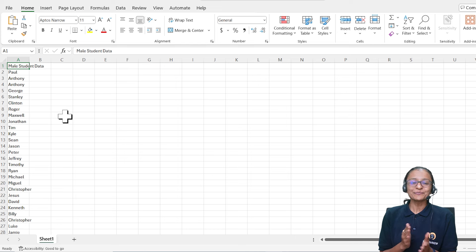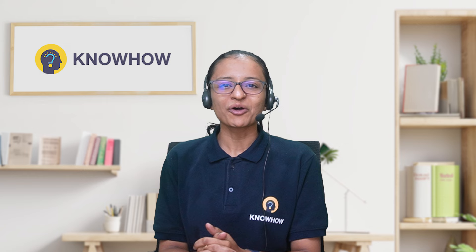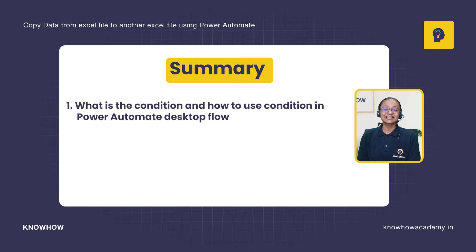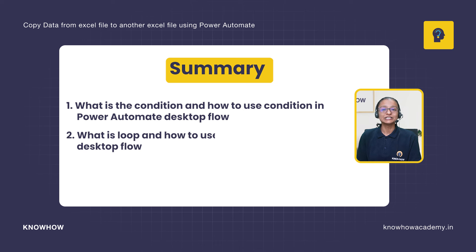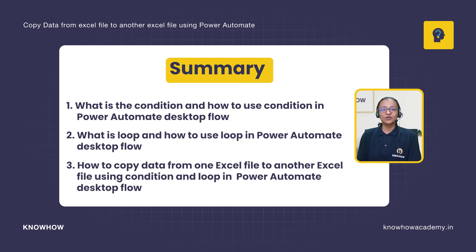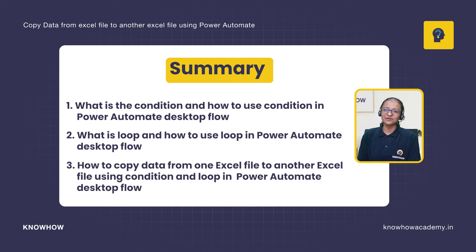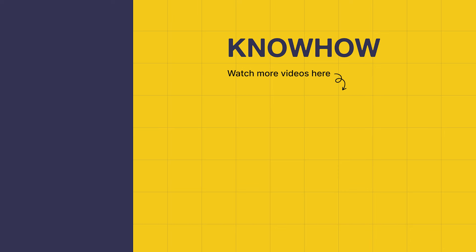Open the Downloads folder and check the demo file — all the male student first names are written there, copied entirely by Power Automate Desktop flow without manual intervention. To summarize: you learned what is a condition and how to use it, what is a loop and how to use it, and how to copy data from one Excel file to another using loops and conditions in Power Automate Desktop. Thank you for choosing KnowHow Academy — stay curious, keep learning!